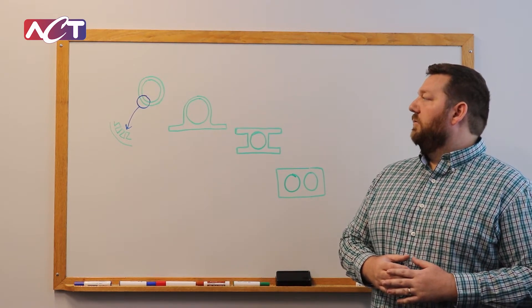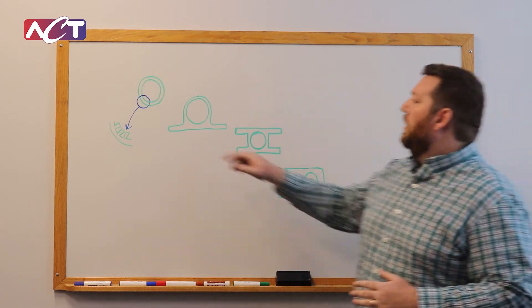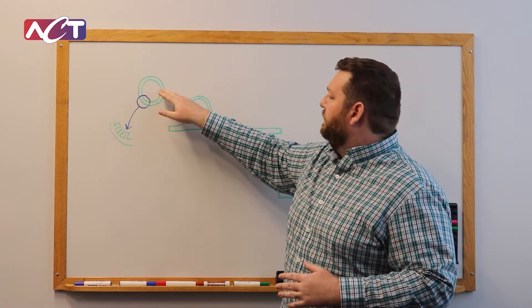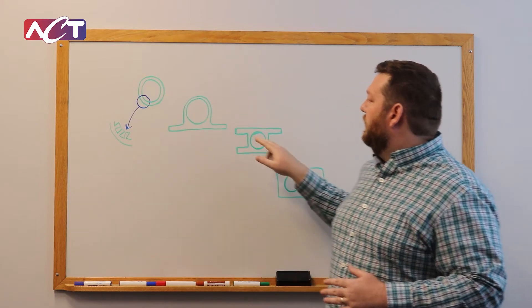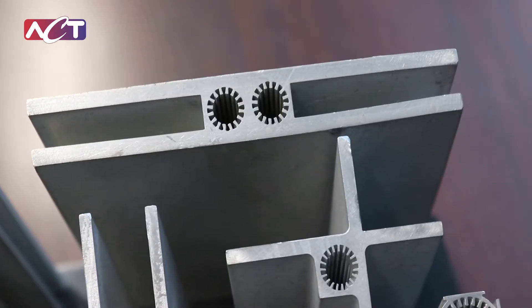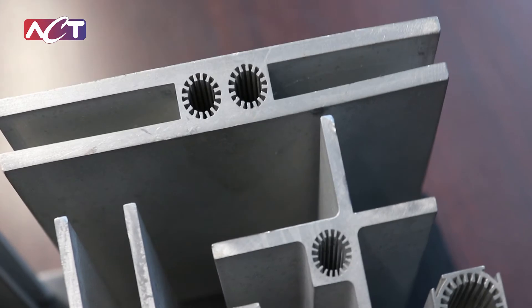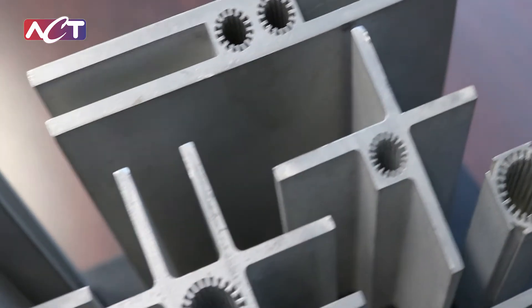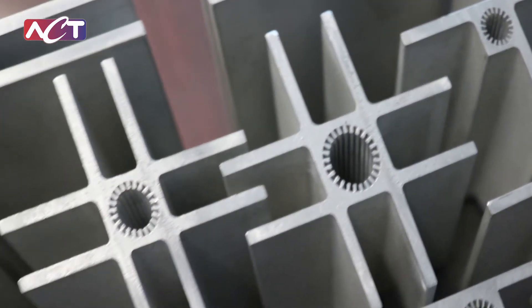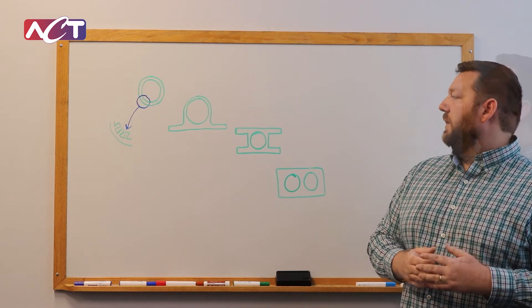So the grooves in a CCHP are on the inner bore. Every CCHP type has a bore with these grooves built in, and that is the wick structure that carries the working fluid along the pipe.